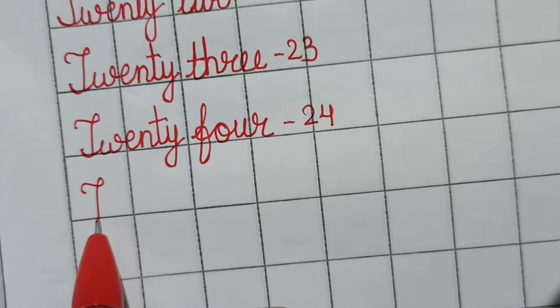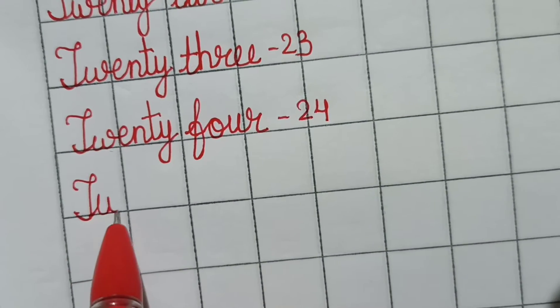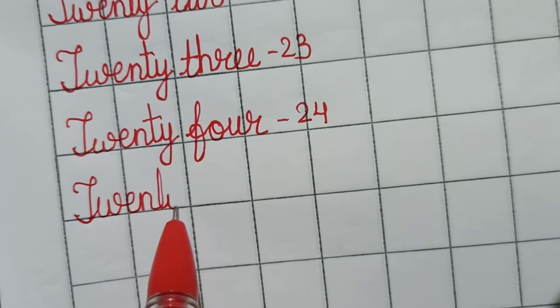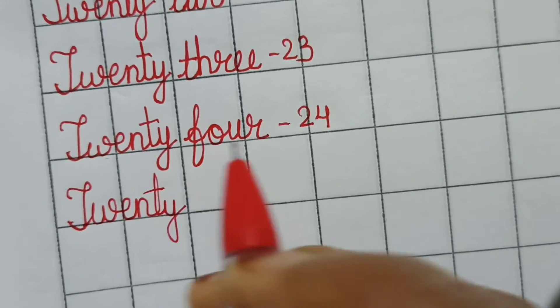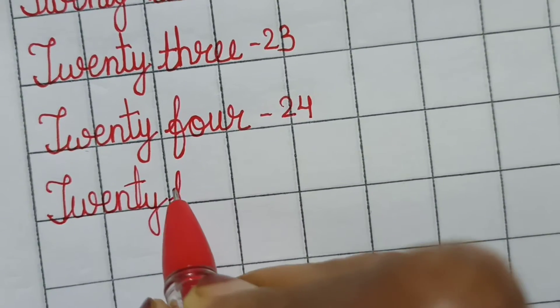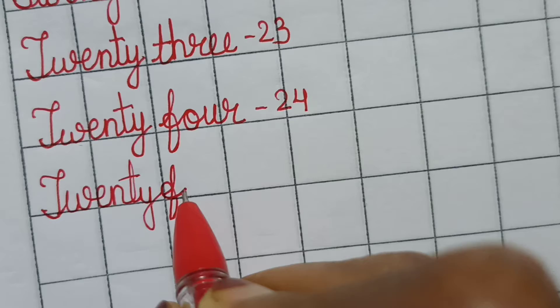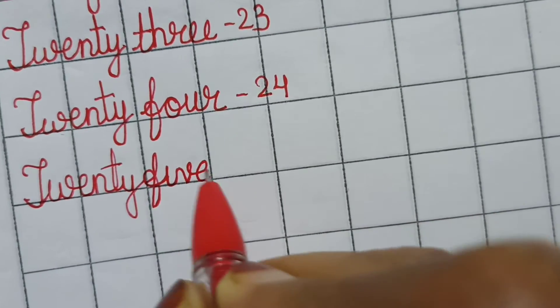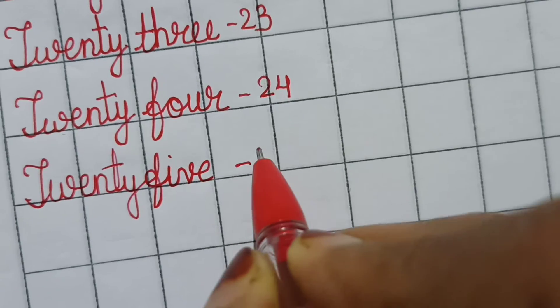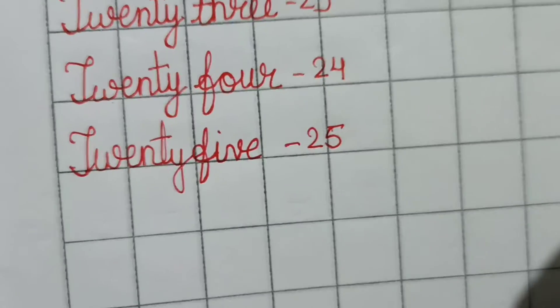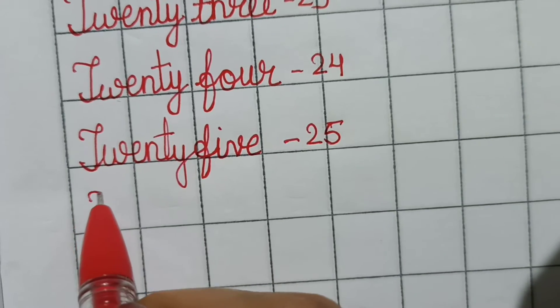Now let us write the spelling 20. Again here 20. Then we will write the spelling 5. So again we will write this, F small f. Then we will go up. I-V-E. 25. Now look here.